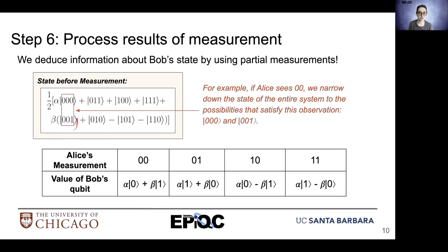With her measurement information, we are able to come to some conclusions about what the state of that final qubit will be. If we have a measurement of zero zero for Alice, the value of Bob's qubit is alpha ket zero plus beta ket one. If Alice measures a one one, the value of Bob's qubit is alpha ket one minus beta ket zero.